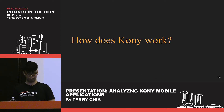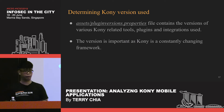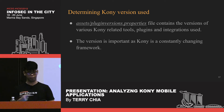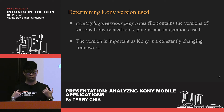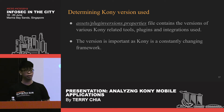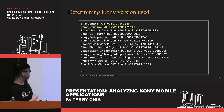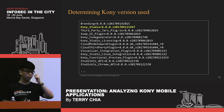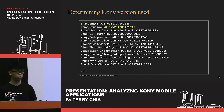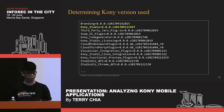The first thing you might want to know is what version of Kony was used to build the application. You can get that from a file in the APK called PluginVersions.properties, which contains version strings of all the Kony-related tools, plugins, and integrations used to build the app. The version is important because Kony constantly changes, so a technique that works on one version may not work on another.